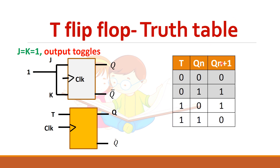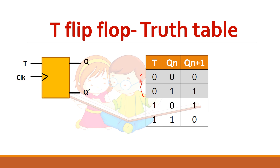Looking at the truth table, T is the input, Qn is the present output, and Qn plus one is the next output. If T is zero and Qn is zero, the next output is also zero. If Qn is one, Qn plus one is one — there is no change in the output when T is zero. Whereas when T equal to one, if the previous output was zero, next it will toggle to one, and from one it goes to zero. So toggling occurs when the input is one.